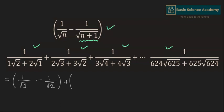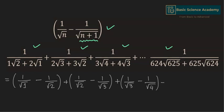Plus, the second term equals 1 divided by square root 2 minus 1 divided by square root 3. Plus, the third term equals 1 divided by square root 3 minus 1 divided by square root 4. And for the last term, we have 1 divided by square root of 6⁴ minus 1 divided by square root of 6⁵.